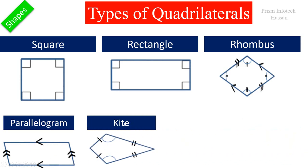Next one is a kite. In this shape, adjacent sides are equal, and along with that one pair of angles are equal.